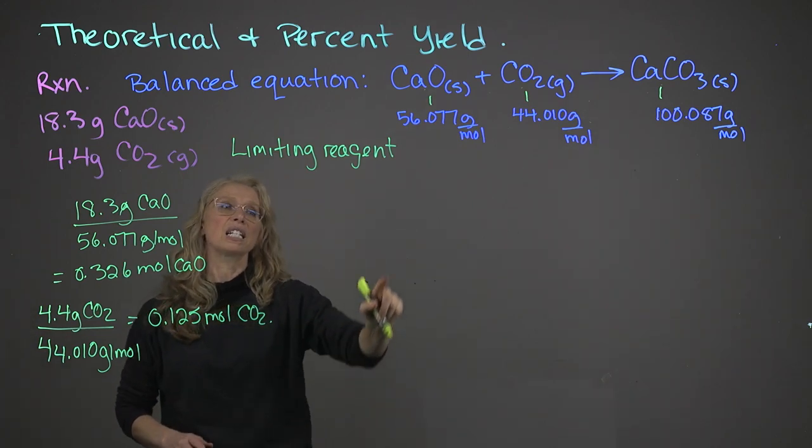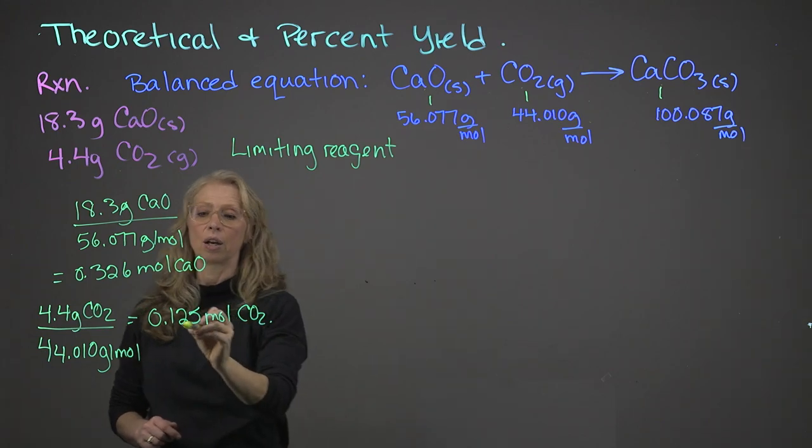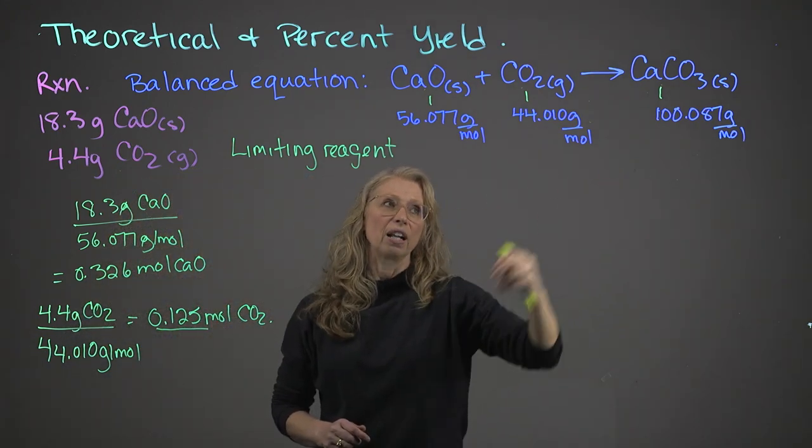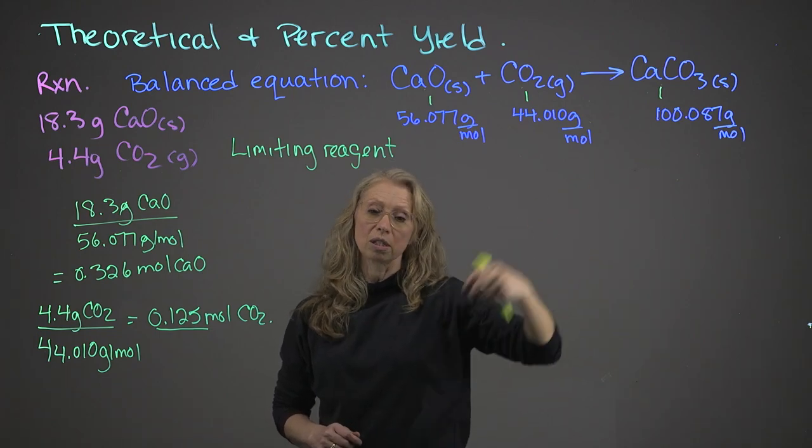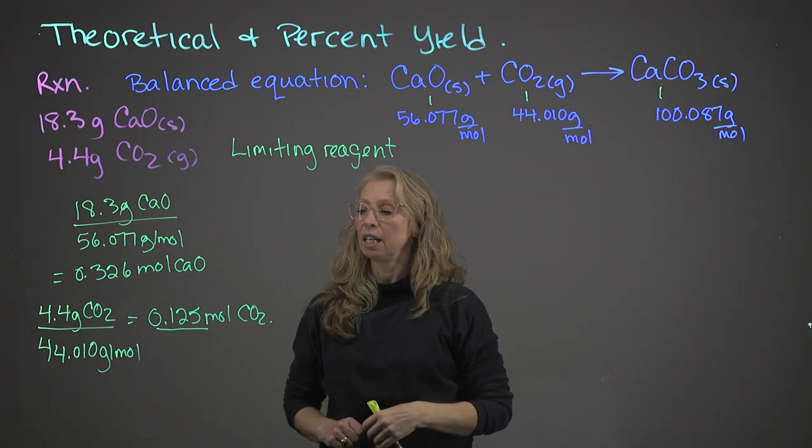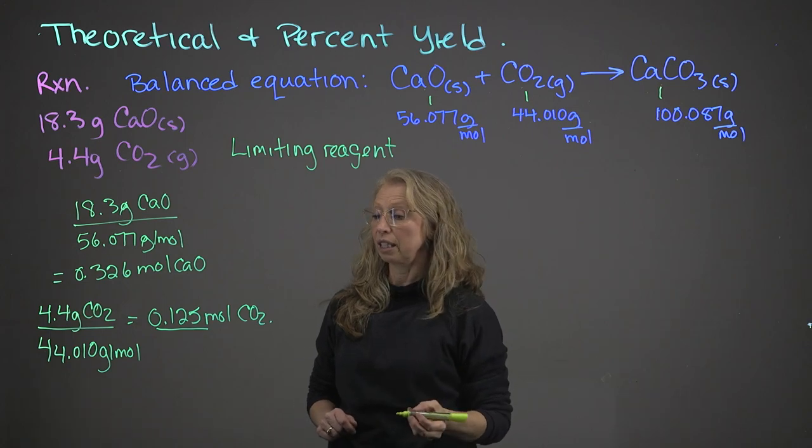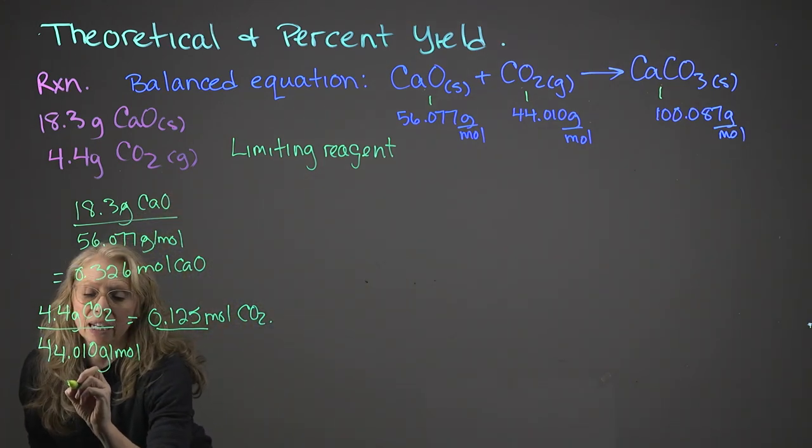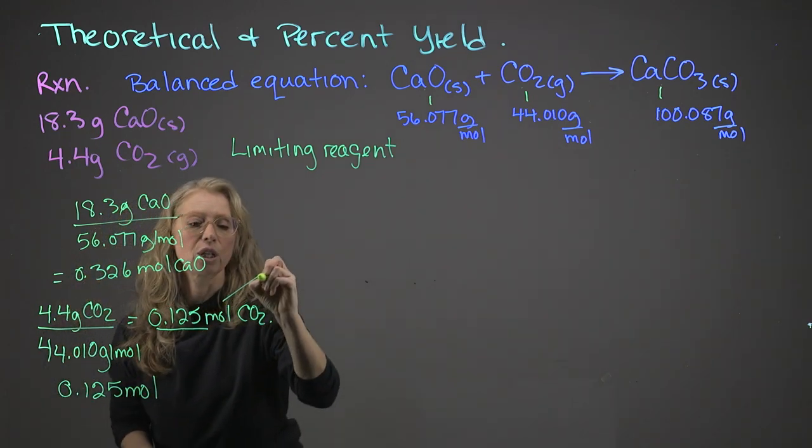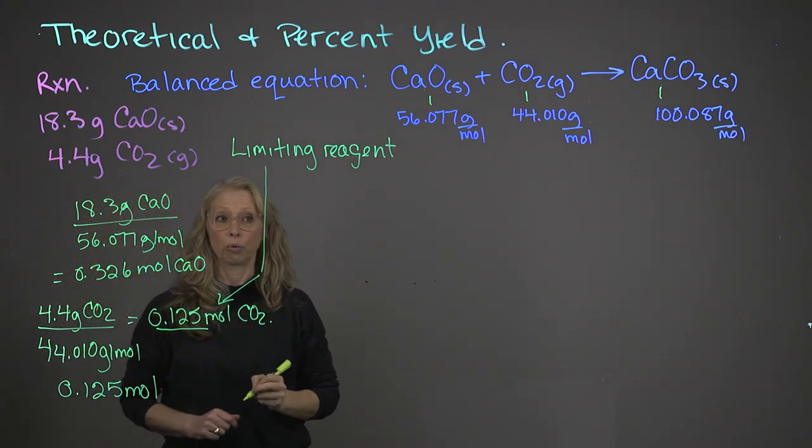So, because this is a 1 to 1 to 1 molar relationship, we can identify the lower value as being the value of the number of moles that we can create in the situation of the calcium carbonate. However, we need to show this relationship in a calculation. So, this becomes our limiting reagent.